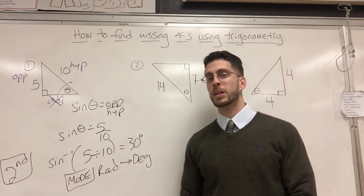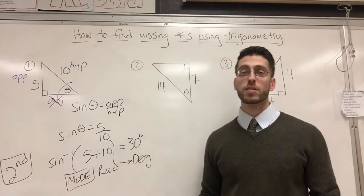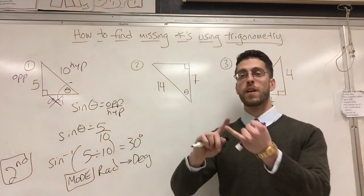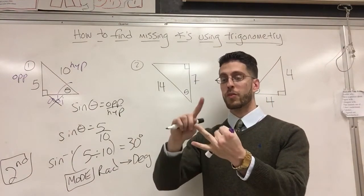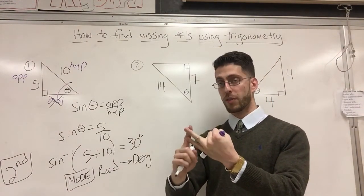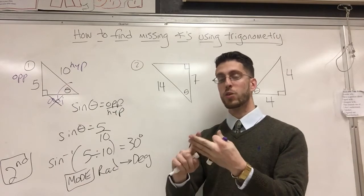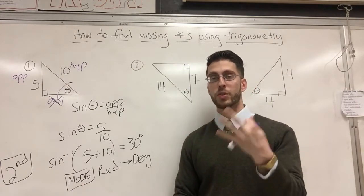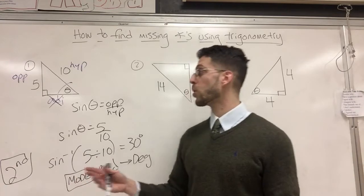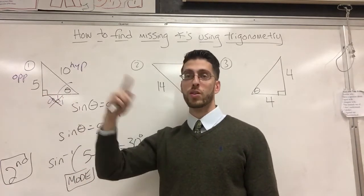All right, that's basically it. I'm going to do two more practice ones. But if you understand, label the diagram, figure out which of the three formulas or the three ratios to use, and then use the inverse button. That's it. Three steps. You got missing angles. You no longer need two angles. You only need one angle and two sides.